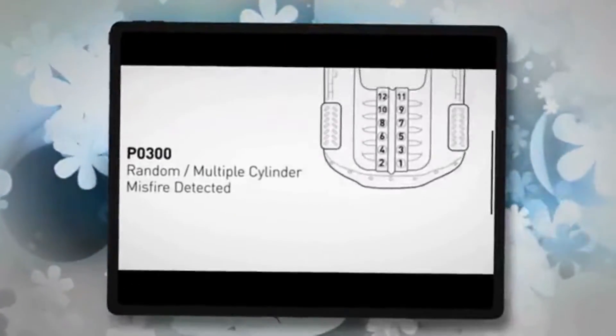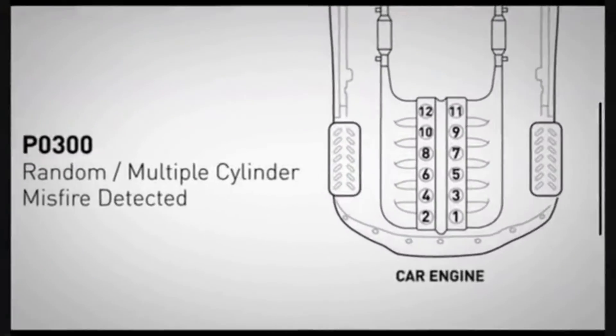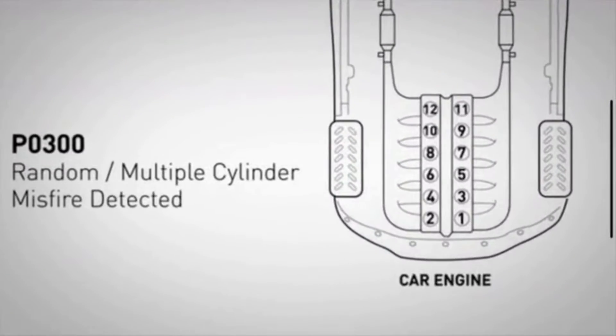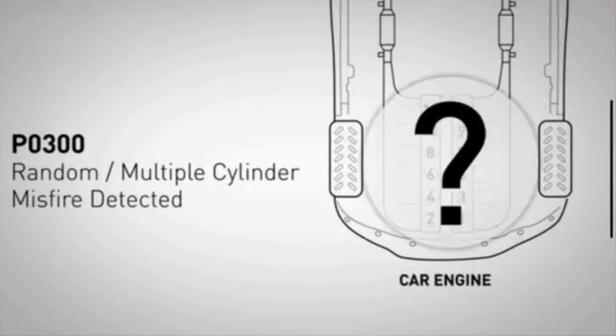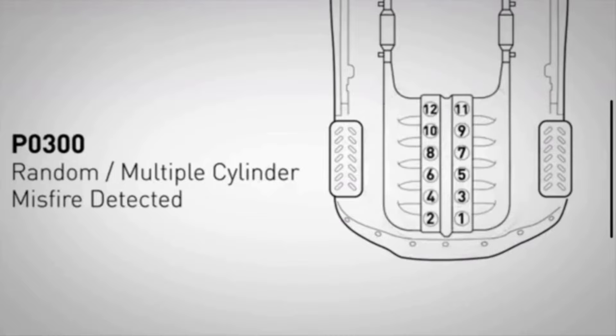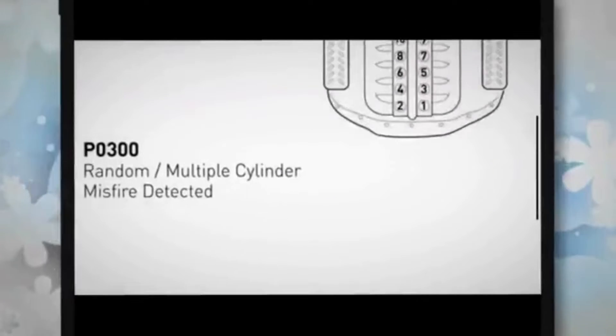The PO300 trouble code is a diagnostic trouble code that indicates a random or multiple misfire in the engine. In order to find out which cylinder is misfiring, you need to check all the cylinders and locate the damaged one.